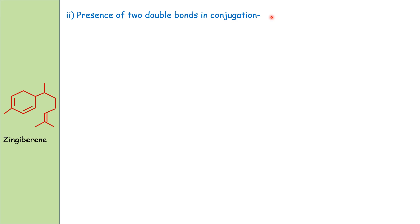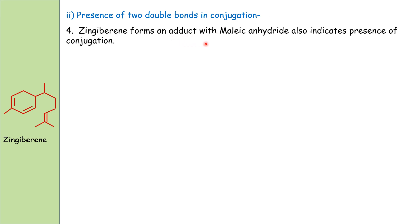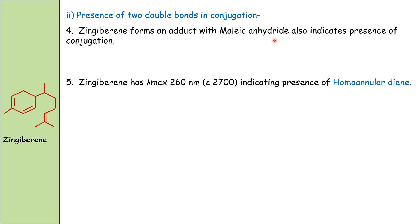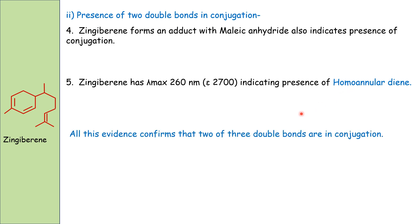Another piece of evidence: gingivirine forms an adduct with maleic anhydride, indicating conjugation — it acts as a diene in a Diels-Alder type reaction. Furthermore, gingivirine has a UV absorption lambda max of 260 nm, indicating the two conjugated double bonds are in the same ring, making it a homoannular diene. All these evidences confirm that two of the three double bonds are in conjugation.